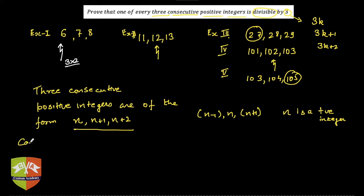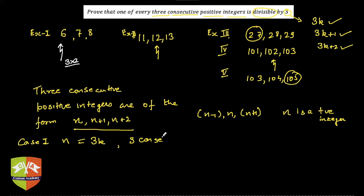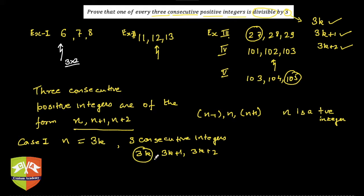Now consider three cases for n. Case 1: n is of the form 3k. If n equals 3k, the three consecutive integers are 3k, 3k plus 1, and 3k plus 2. Clearly, 3k is a multiple of 3. So case 1 holds true.